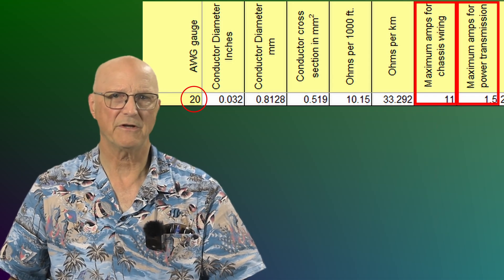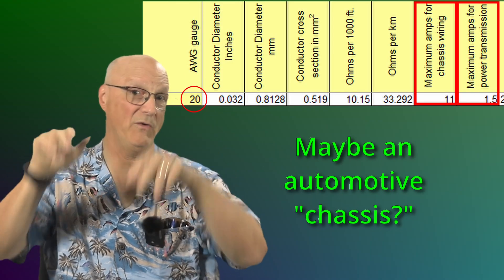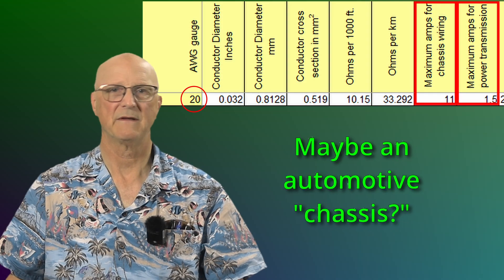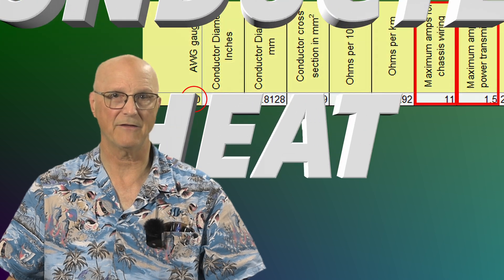Well, unfortunately, my table does not specify what is considered chassis wiring. But why would it have a different current rating? Well, part of the answer is conducted heat and its cousin length.